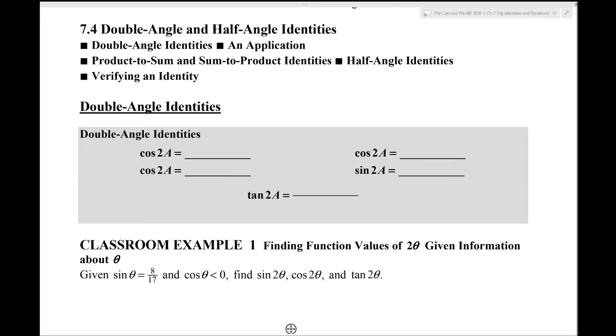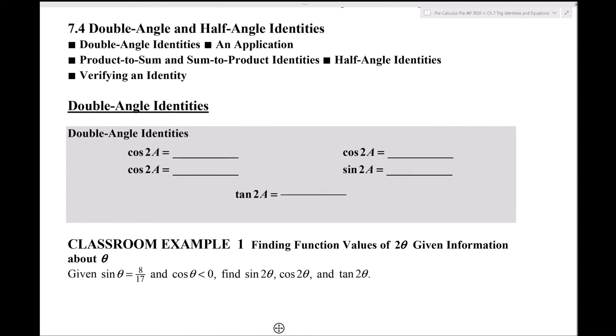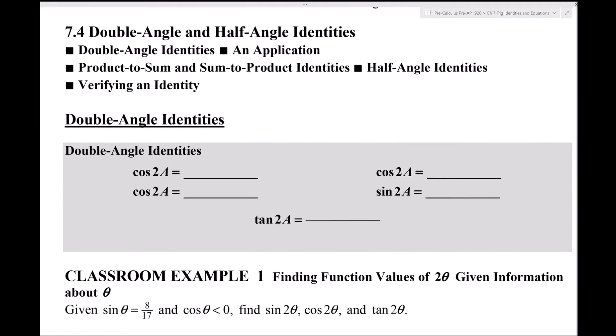Section 7.4 covers double angle and half angle identities. This marks the halfway point of chapter 7. The double angle identities are new to pre-AP students, though dual-enrollment students have seen the first half of this section already.